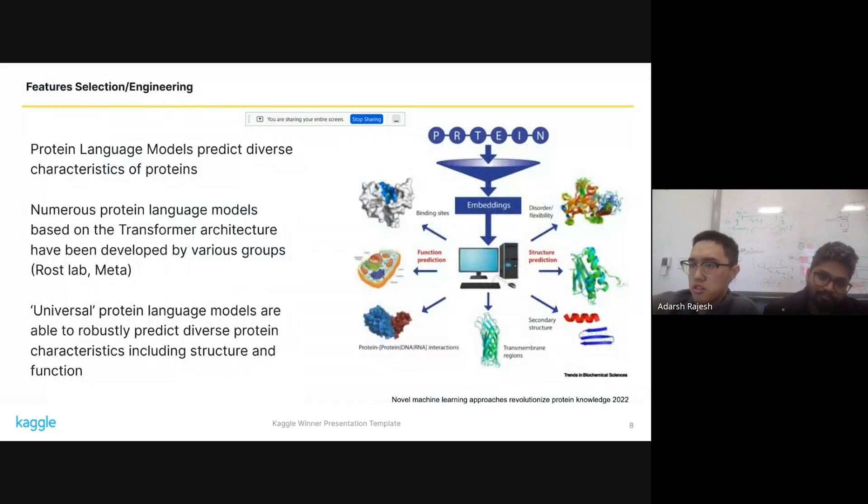So for feature selection engineering, I probably don't really need to introduce protein language models to this audience. They are very powerful tools. They can predict a very diverse range of characteristics for proteins. The ones that we have used, the main ones, were from the Rost lab, as well as from Meta, ESM and ProtT5. And they're just fantastic tools. We are very excited to be using them during this competition.